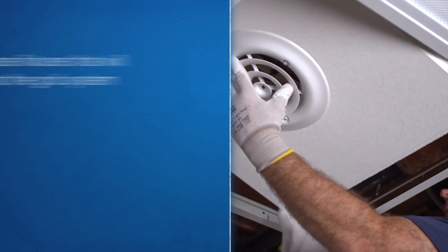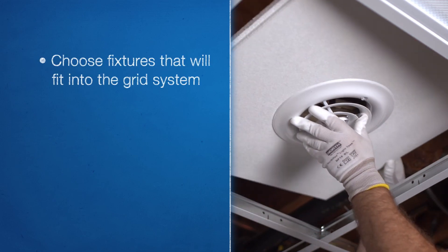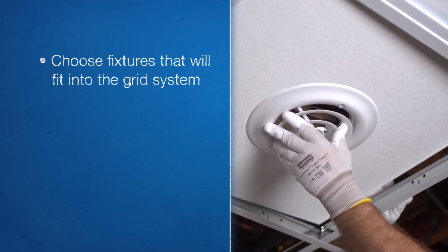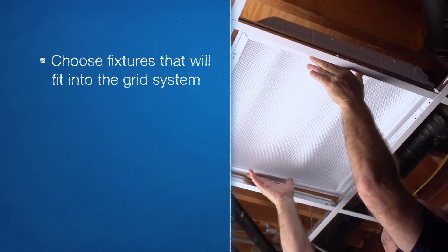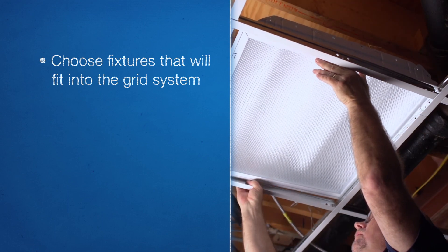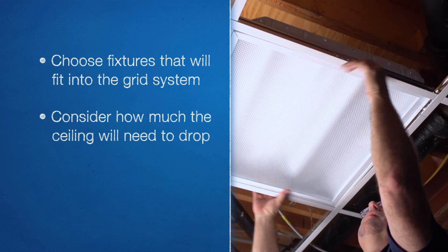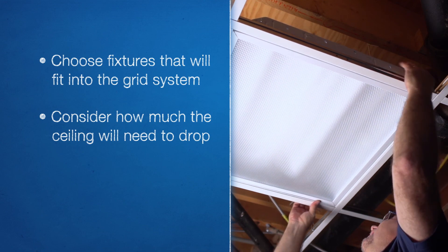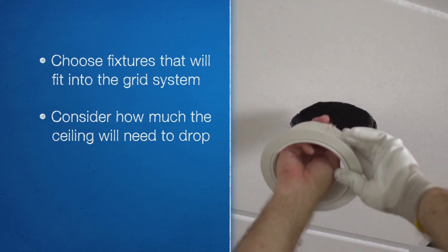If installing fixtures, choose one that will either fit into the grid system or can be attached to the grid system. If you are using a fluorescent fixture that will sit into the grid, you must consider how much the ceiling will need to drop to accommodate the fixture. If you are going to use a pot light, ensure that you read and follow the directions for supporting the fixture.